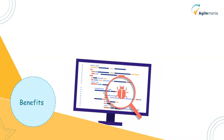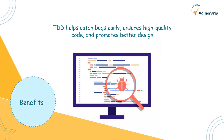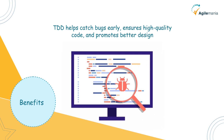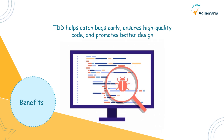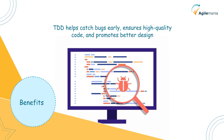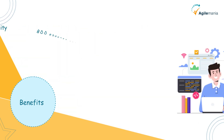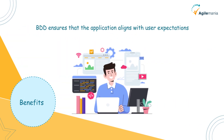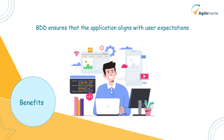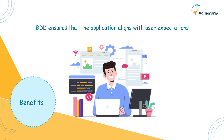The next aspect is benefits. TDD helps catch bugs early, ensures high-quality code, and promotes better design. Since the tests are written first, you're always coding with a clear goal in mind. BDD ensures that the application aligns with user expectations. It fosters teamwork and makes it easier to adapt to changes because the expected behavior is clearly defined.